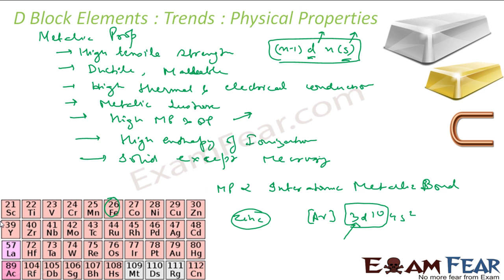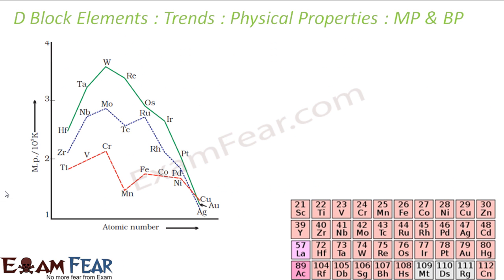The melting point is maximum somewhere in the middle of the period. If you look at the melting point curve, it increases moving from left to right and then decreases again. For example, tungsten has a very high melting point. Starting from titanium, vanadium, chromium — the melting point is maximum around the middle and then goes down toward the end of the series.